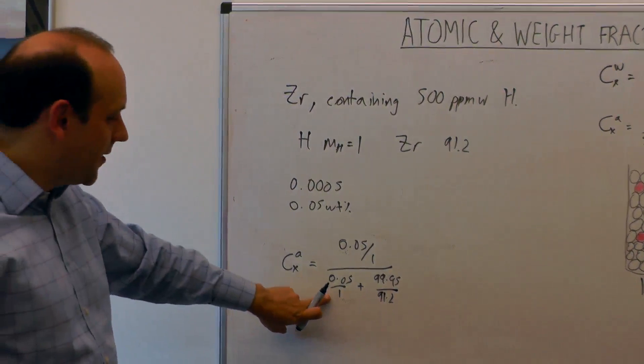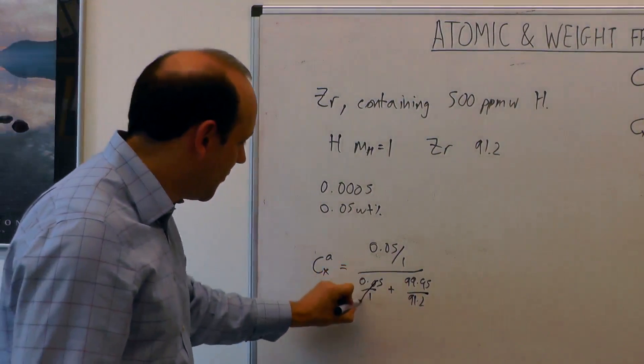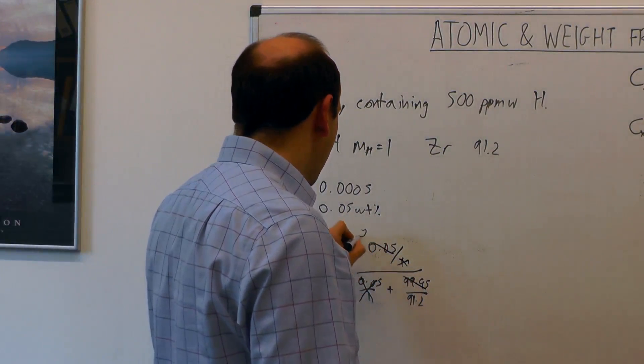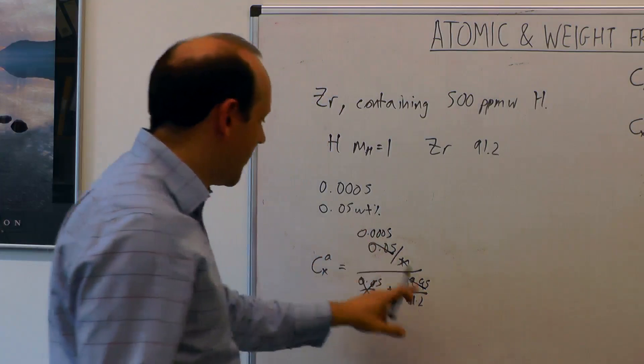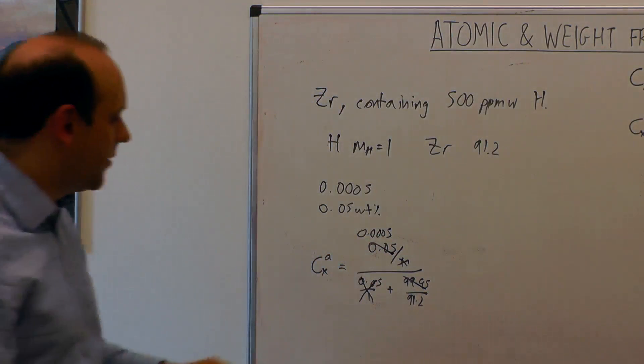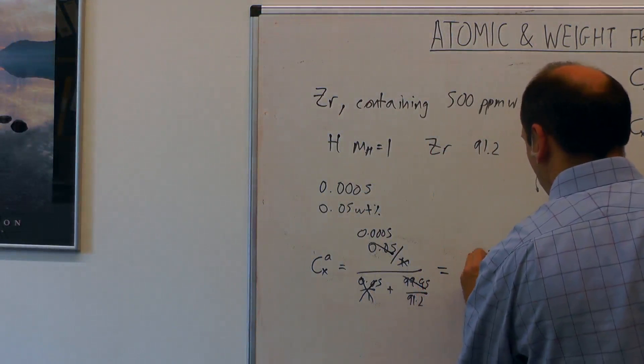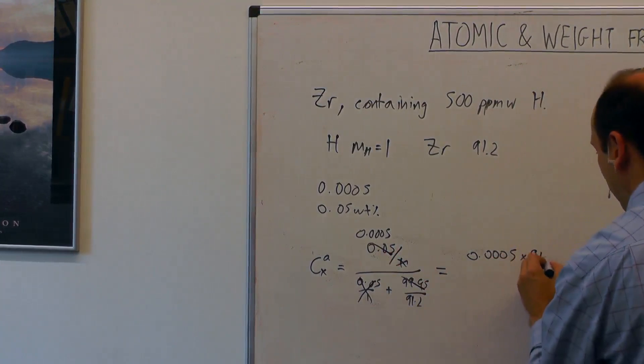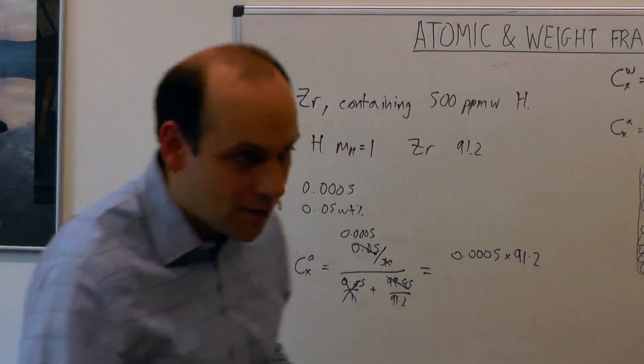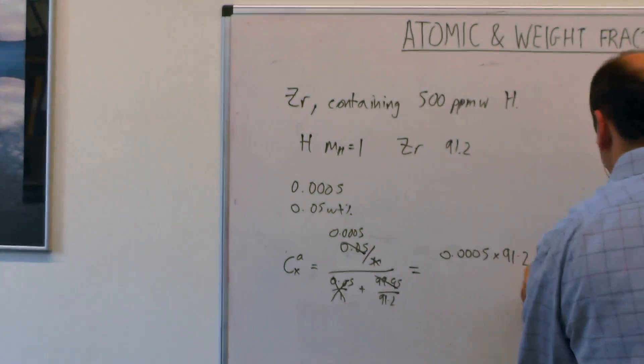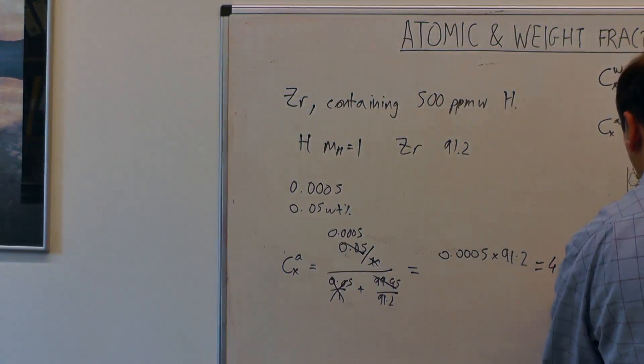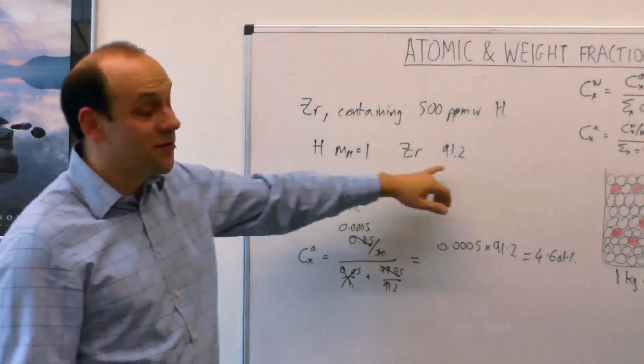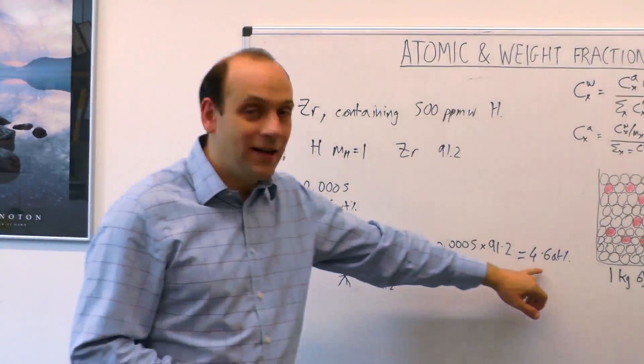This is going to be a very small number compared to this, so we'll just ignore this guy. That's approximately 100 percent if we make that back into 0.0005. We can say that that's equal to 0.0005 times 91.2, and so that is equal to 4.6 atom percent. Although you're only at 500 ppm by weight of hydrogen, because hydrogen's 100 times lighter than zirconium, that's actually nearly 5 atom percent.